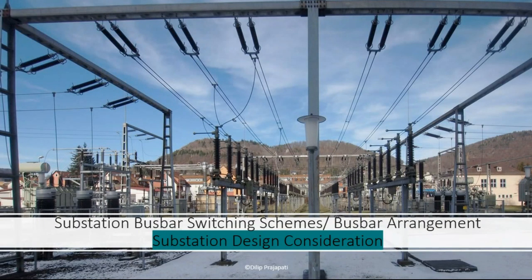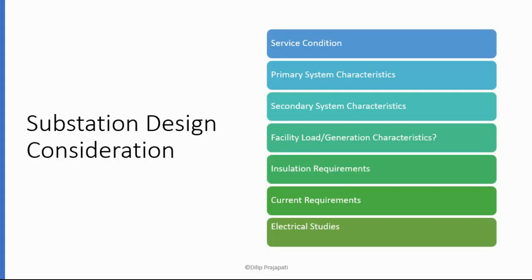In this lecture we are going to learn various substation design considerations. These are the various substation design considerations: first is service condition, then primary system characteristics, then secondary system characteristics, then facility load or generation characteristics, then insulation requirements, then current requirements, and electrical studies. Now we will see each consideration in detail one by one.